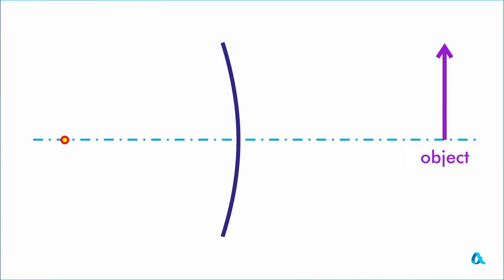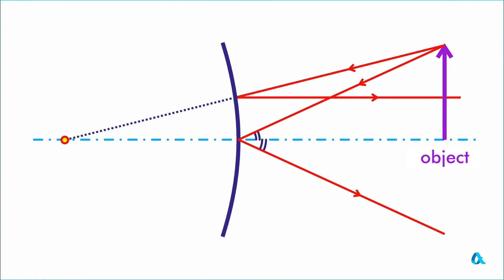Now I will construct the image of the object in a convex mirror, using the same convenient ray method. I will aim the first ray at the focus, and after reflecting, it will travel parallel to the optical axis. I will direct the second convenient ray to the mirror's optical center, and it will reflect at the same angle to the optical axis.